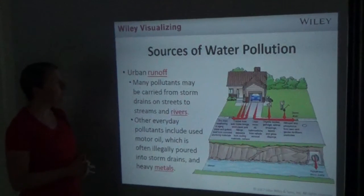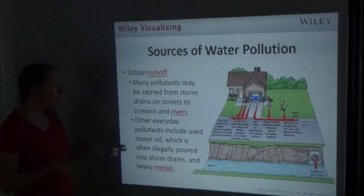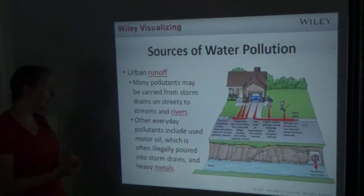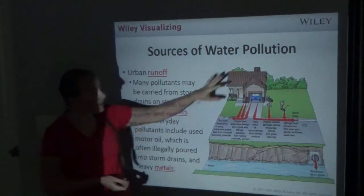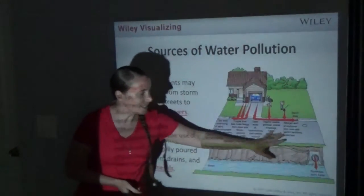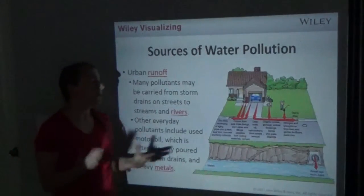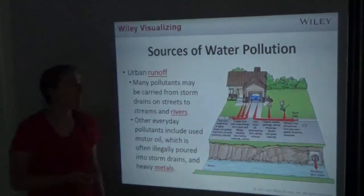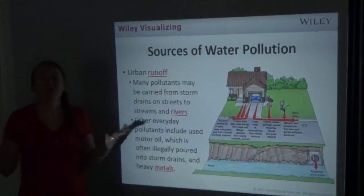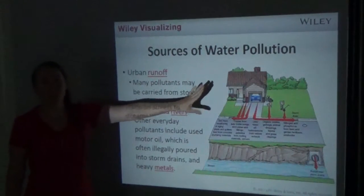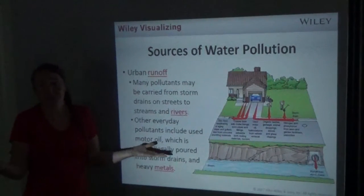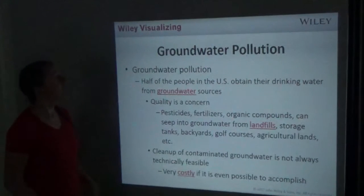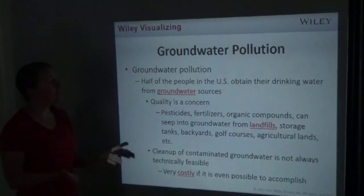Urban runoff pollutants may be carried from storm drains on streets to streams and rivers. Everyday pollutants include used motor oil, which is often illegally poured into storm drains, and heavy metals. There's a diagram showing all the different types of chemicals that can be included in runoff just from a normal house — not even a big city.